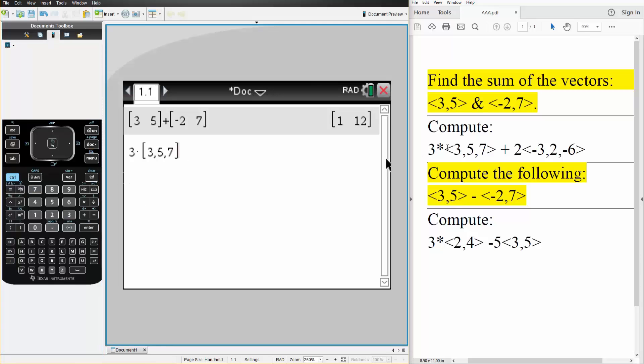Next, we do plus 2 times square bracket, negative 3, 2, negative 6. So 3 times 3, 5, 7 plus 2 times negative 3, 2, negative 6. We hit enter, and this is the second answer.